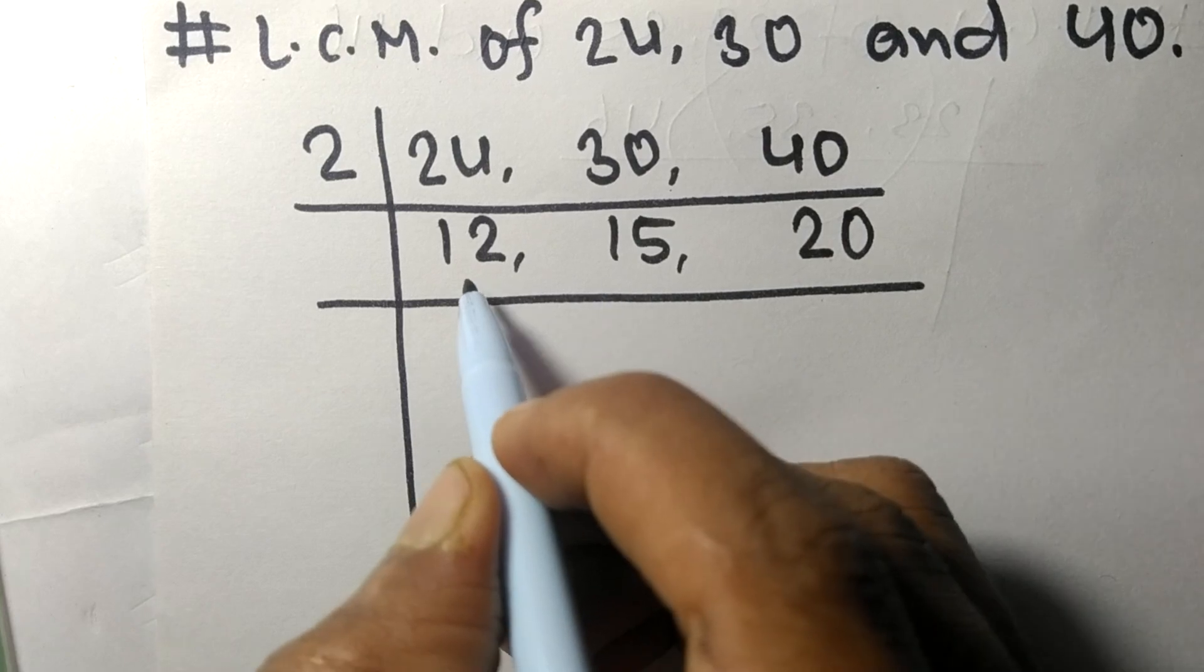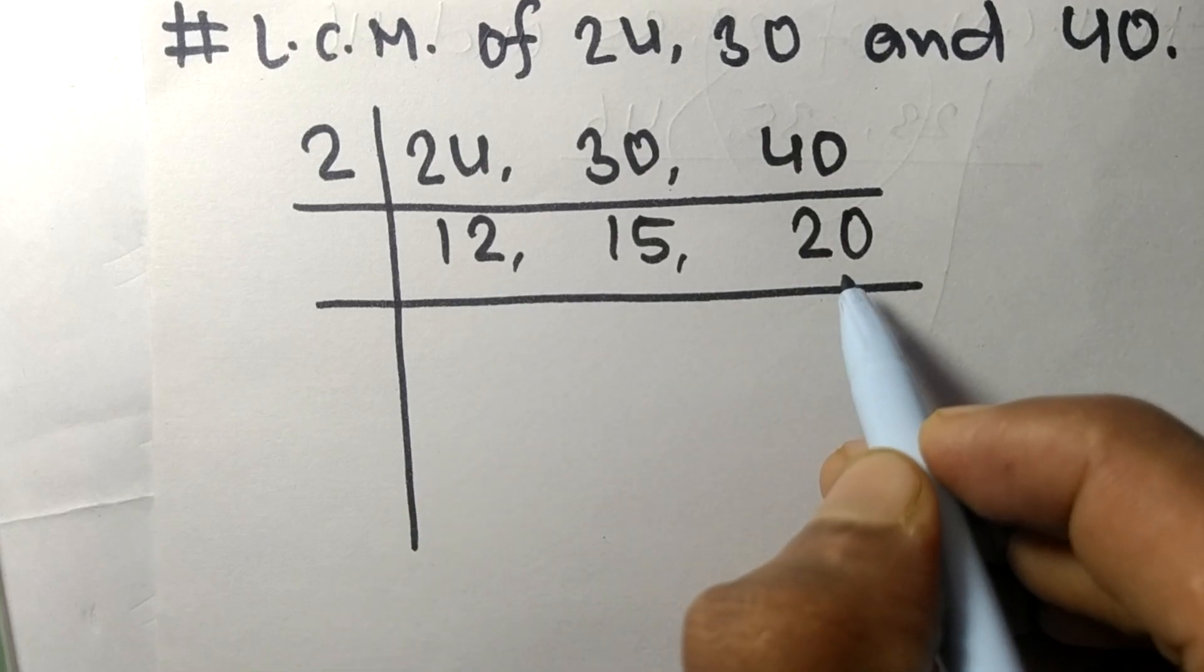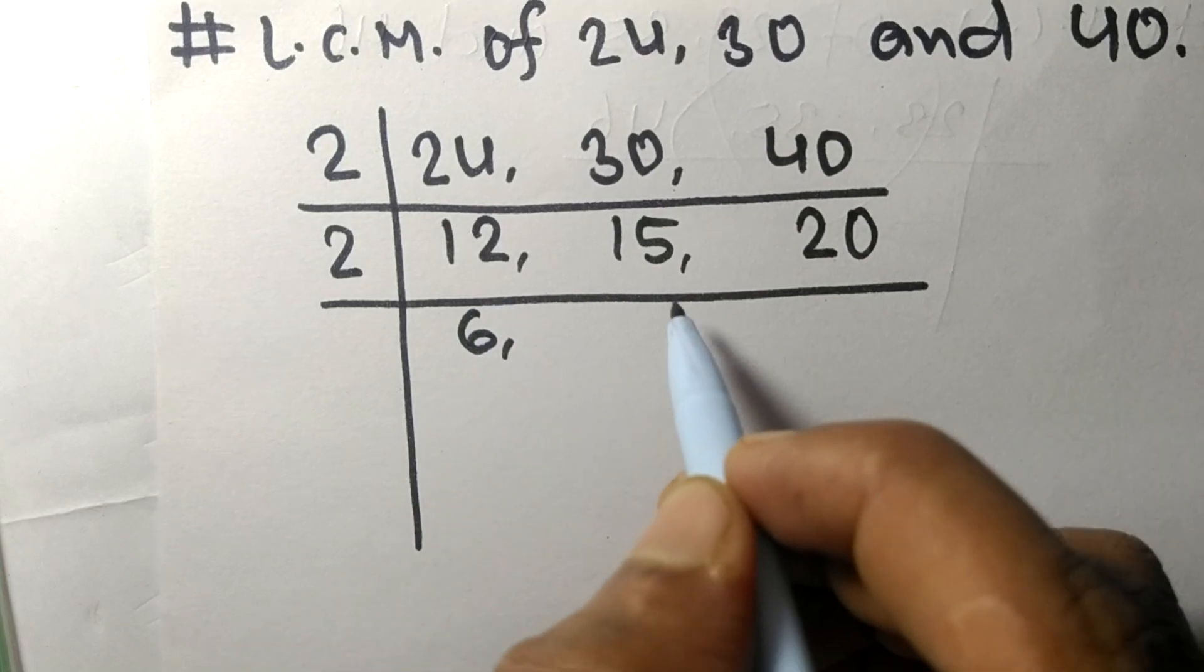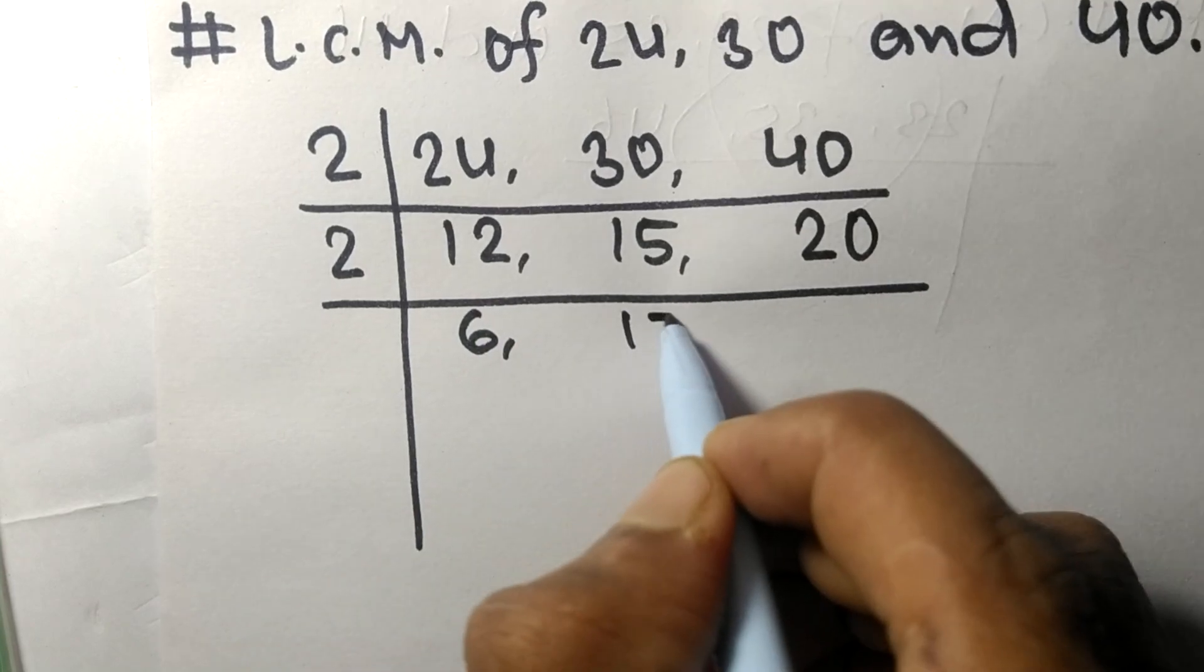Now 12 and 20 are divisible by 2. 2 times 6 means 12, 15 is not divisible so it stays the same, 2 times 10 means 20.